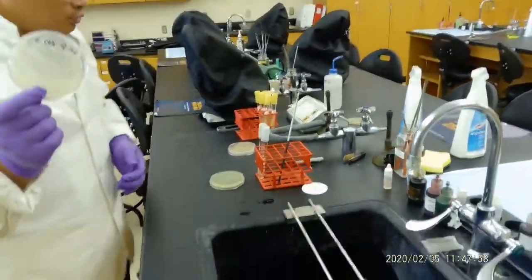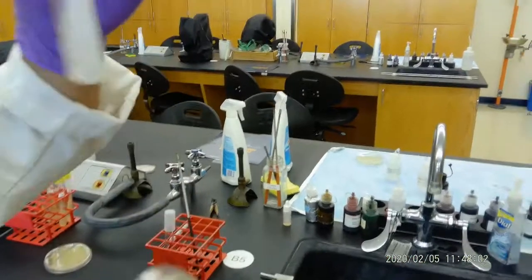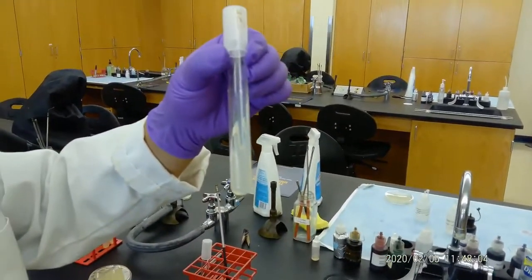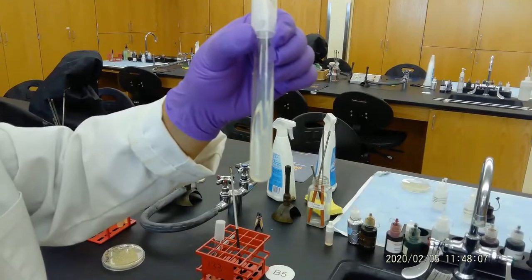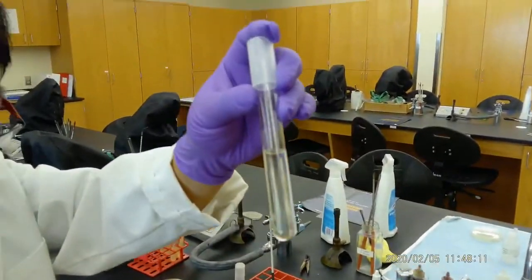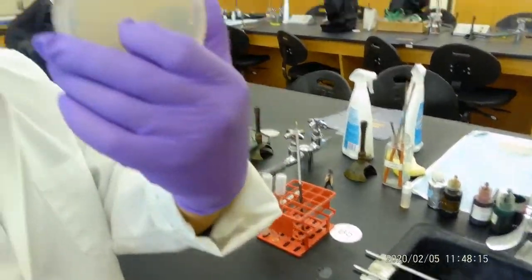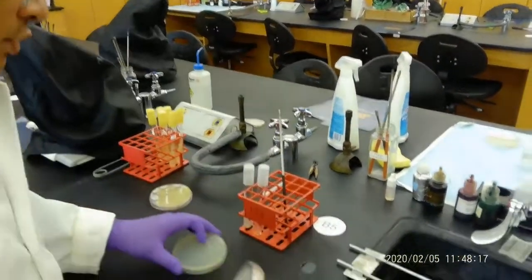So what we're going to do is we will be transferring a single colony onto slants. Slants are usually for short-term storage, about less than one month. Transferring this to the broth is a liquid media, and then we're going to do a streak plating onto a neutral agar plate.